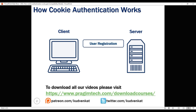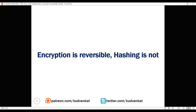Hashing is different from encryption. Encryption is reversible — that is, what is encrypted can also be decrypted. Hashing is one way and irreversible. Hashing scrambles plain text to produce a unique message digest. If implemented using a strong algorithm, there is no way to reverse the hashing process to reveal the original password.